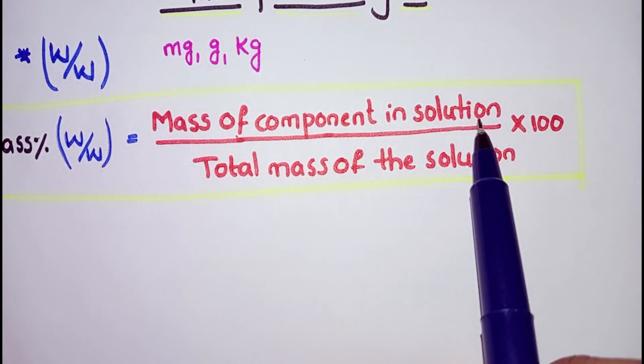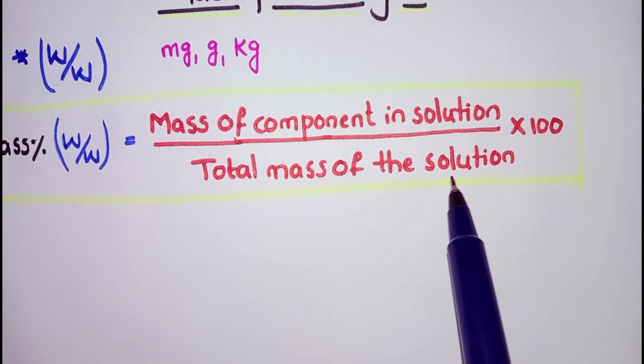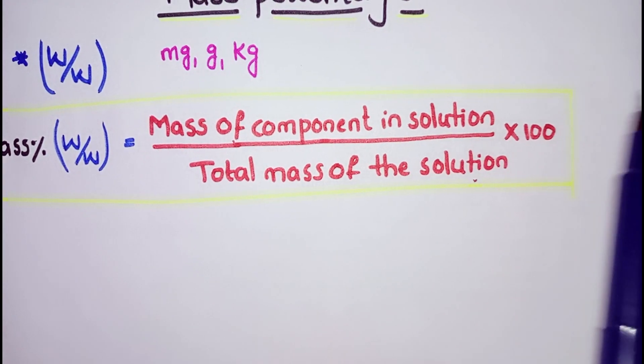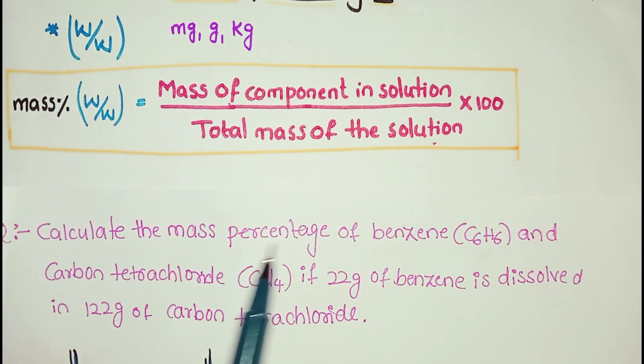Mass of the component in the solution divided by total mass of solution times 100. Let's take one problem: calculate mass percentage of benzene and carbon tetrachloride.